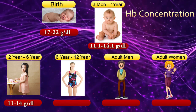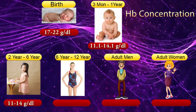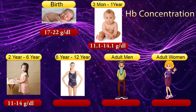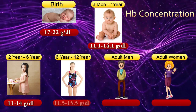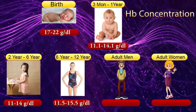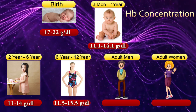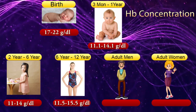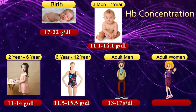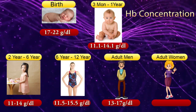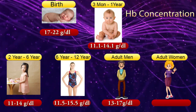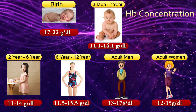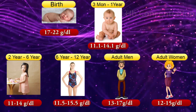Hemoglobin concentration continued. From 6 to 12 years: 11.5–15.5 grams per liter. Adult men: 13–17 grams per liter. Adult women: 12–15 grams per liter.